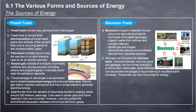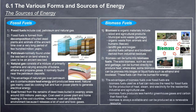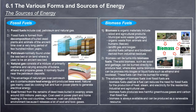Biomass can be turned into biomass fuels. Solid biomass such as wood and garbage can be burned directly to produce heat, while other biomass can be processed into biogas or liquid fuels such as ethanol and biodiesel, which can then be burned for energy. The advantages of biomass fuels over fossil fuels are: biomass fuels can reduce the need for fossil fuels for heat, steam, and electricity in residential, industrial, and agricultural use; biomass fuels produce less harmful greenhouse gases and carbon than fossil fuels; and biomass is always available and can be produced as a renewable resource.